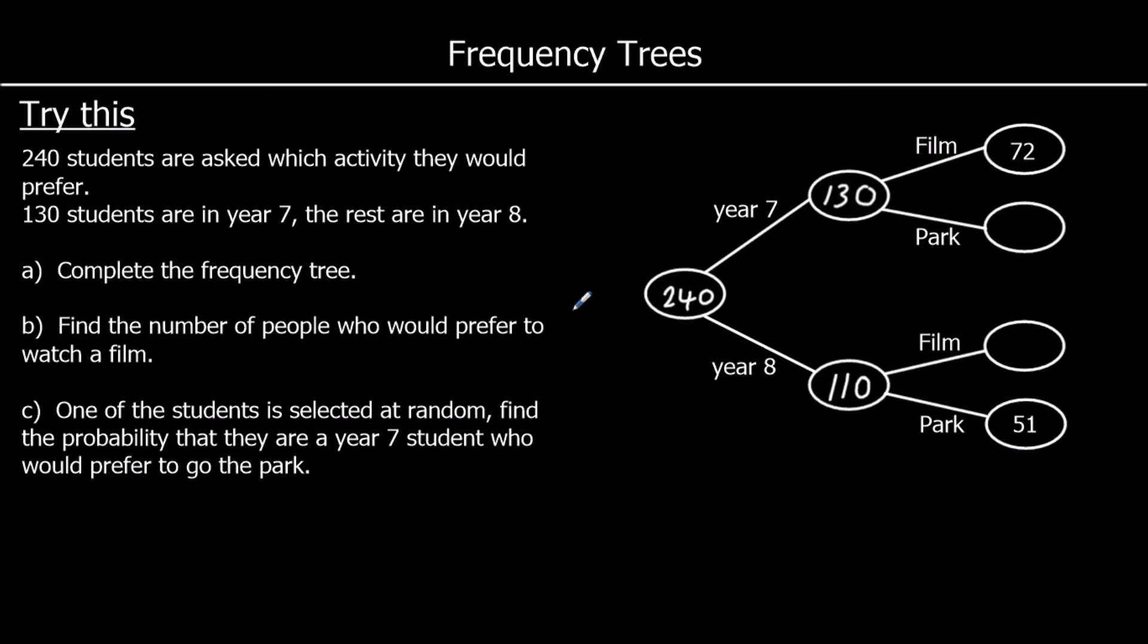And we don't need any more information because part of the frequency tree has been done for us. So we just need to fill in the gaps. So 72 year 7s prefer film. How many want to go to the park? So 130 take away 72. So what do you have to add on to 72 to get to 130? It's 28 to get to 100. 28 and 30 make 58.